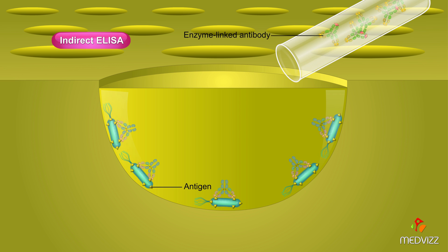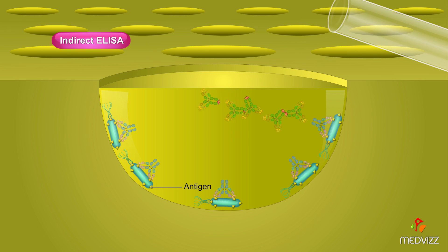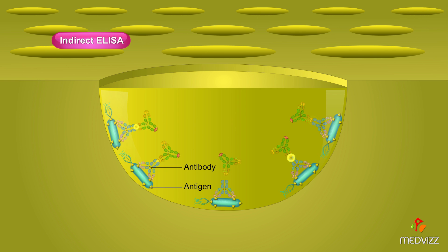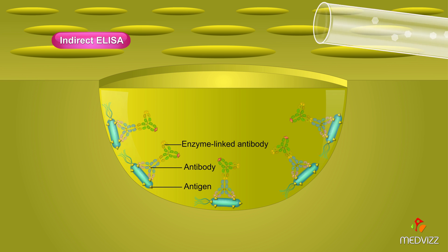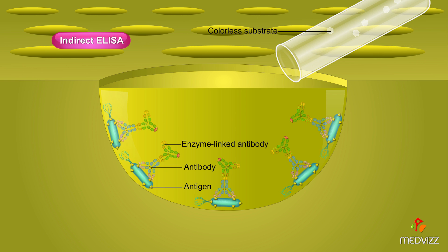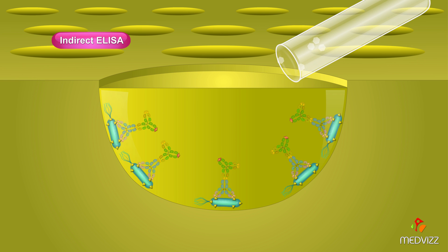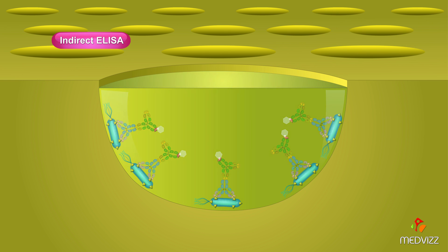Enzyme linked antibody capable of reacting with the constant region of other antibodies is then added, followed by addition of the colorless substrate. Development of color indicates the presence of the antibody being identified.